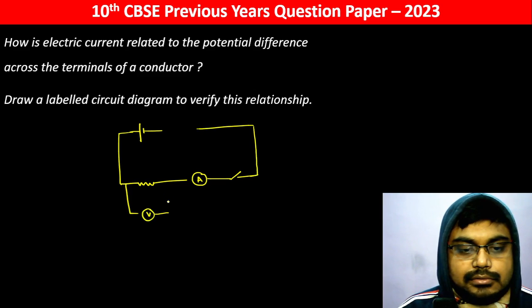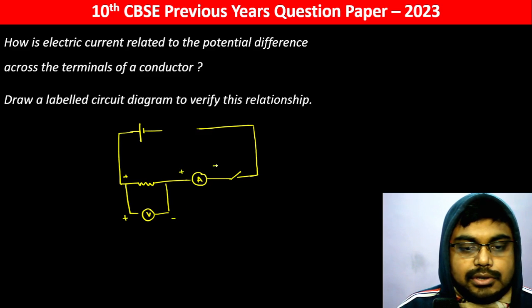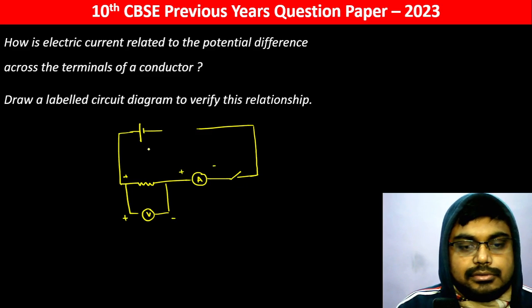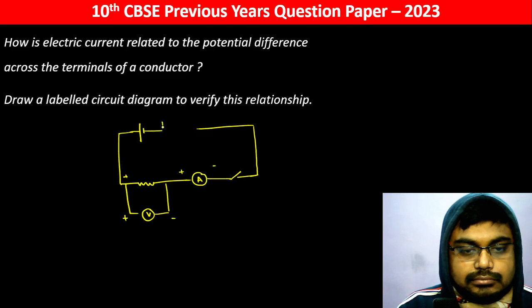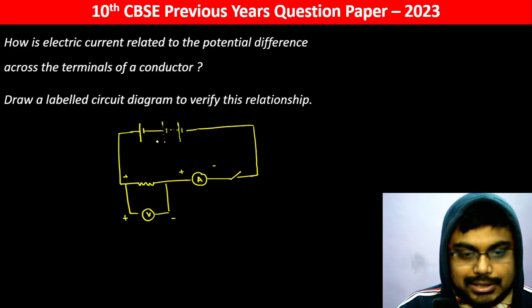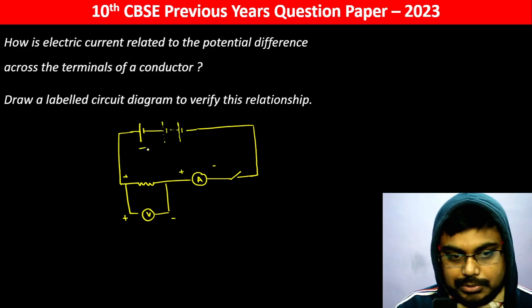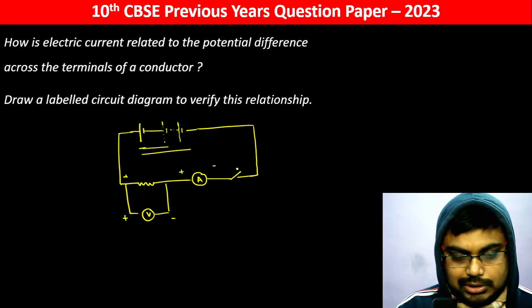Voltmeter लगा देजिए. We will vary the potential difference. First we'll do with one cell, then two cells, then three cells.